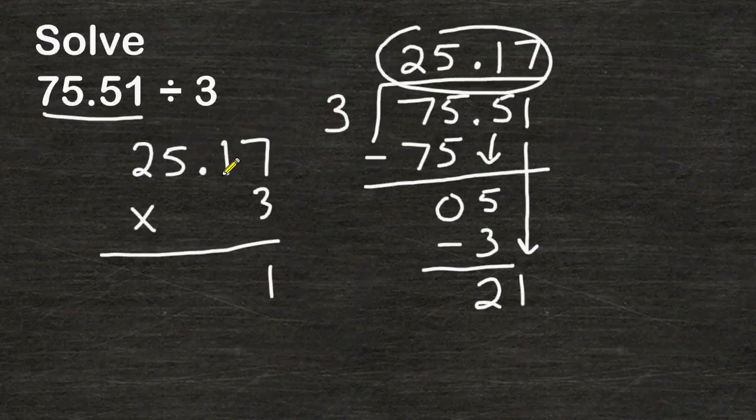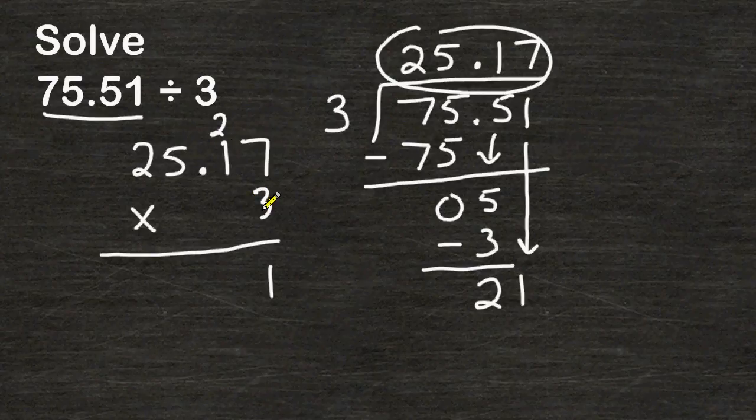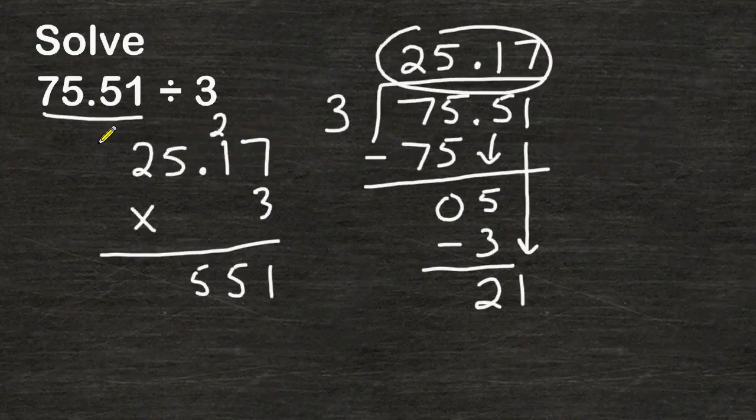3 times 7 is 21, 3 times 1 is 3 plus 2 is 5, 3 times 5 is 15, carry the 1, 3 times 2 is 6 plus 1 is 7.